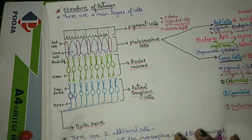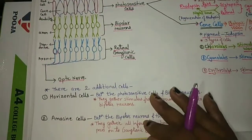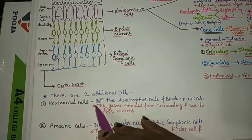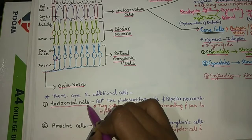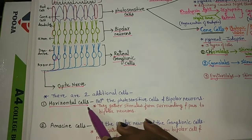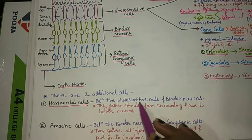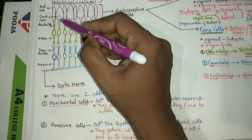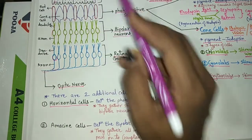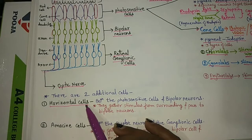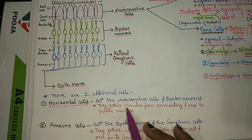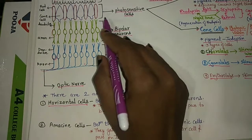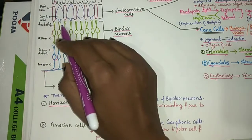There are also two additional layers in the retina. The first are horizontal cells, which are present between the photosensitive cells and the bipolar neurons. Their function is to gather the stimulus from the surrounding area and pass it to the bipolar neurons.